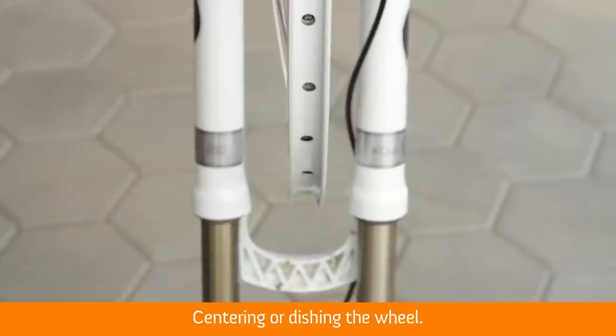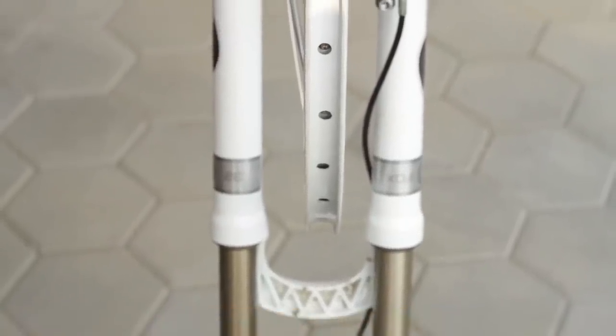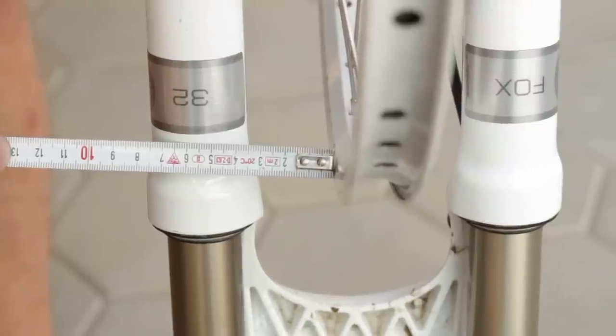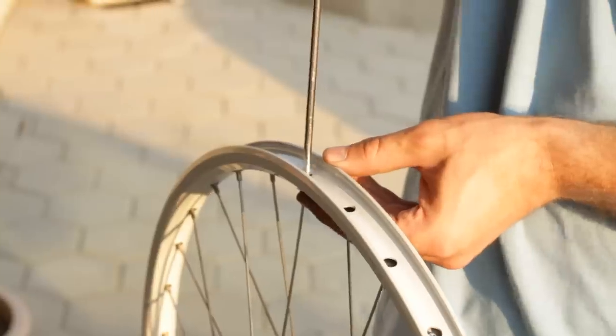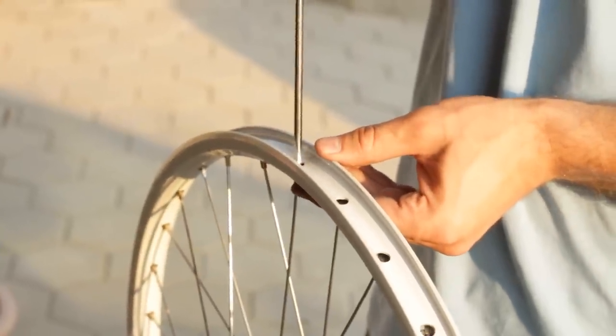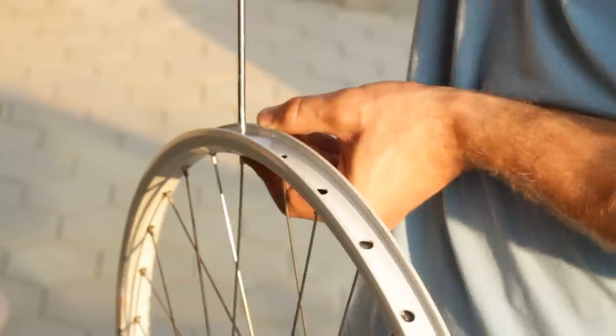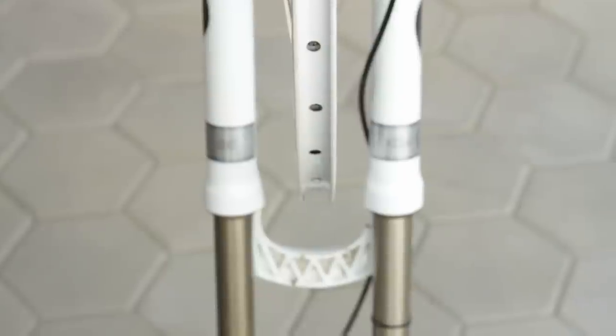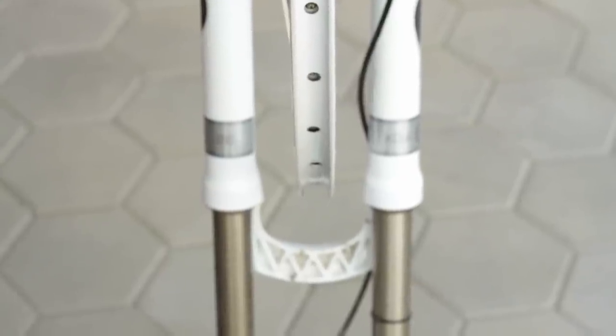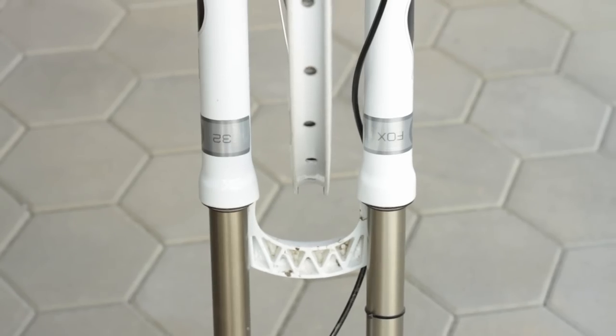Centering or dishing the wheel. The rim on a good wheel must be centered in the frame or fork. Pull the rim toward the center by tightening the spokes on the opposite side of the wheel from the offset. Tighten a half turn each. If the spokes start getting really tight, then instead loosen the spokes on the opposite side of the wheel a half turn each.